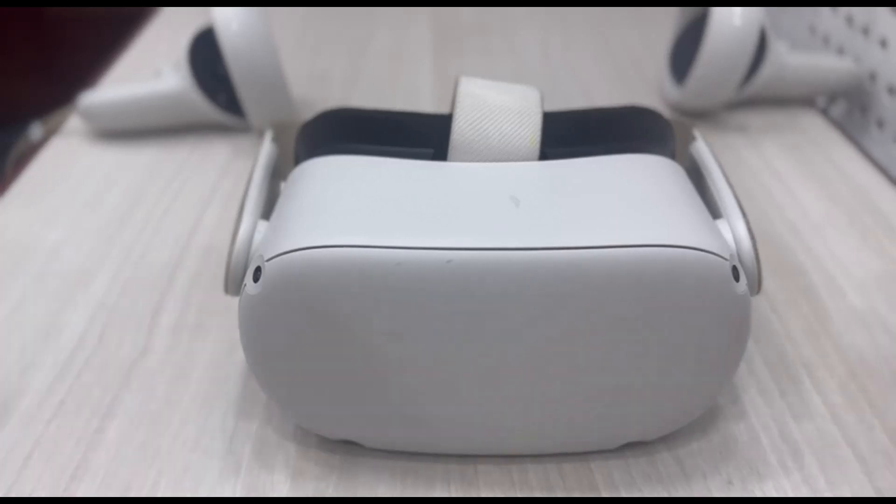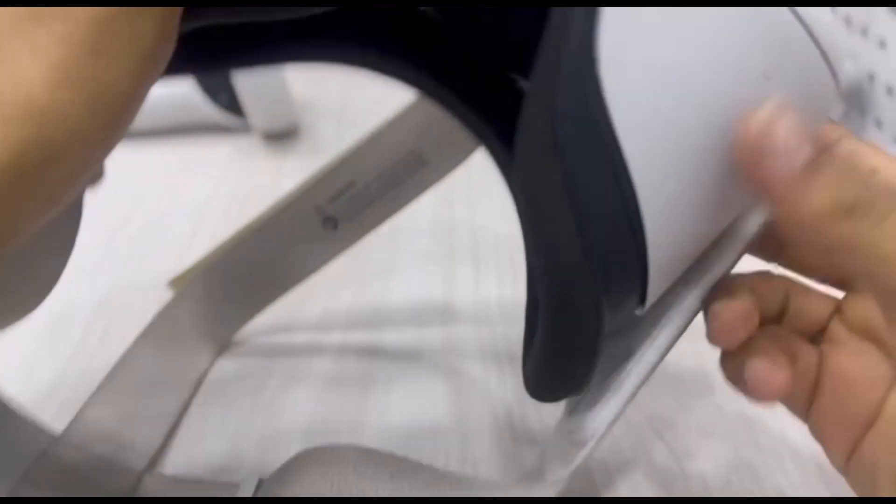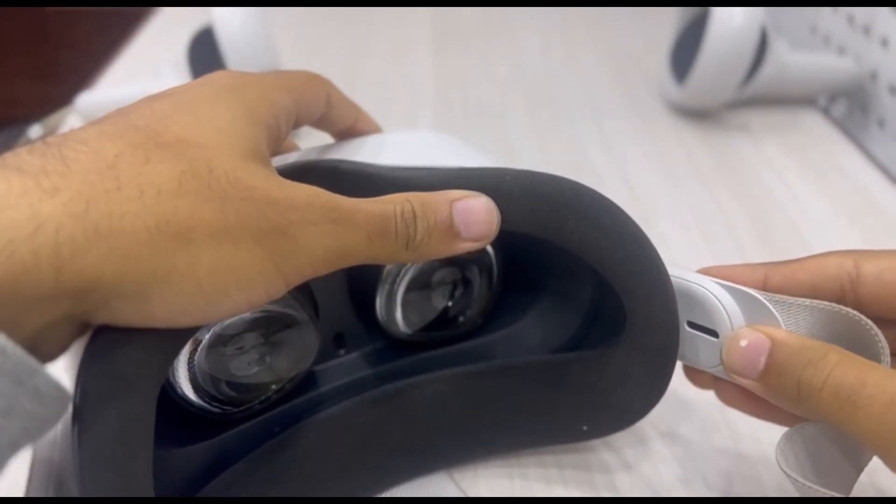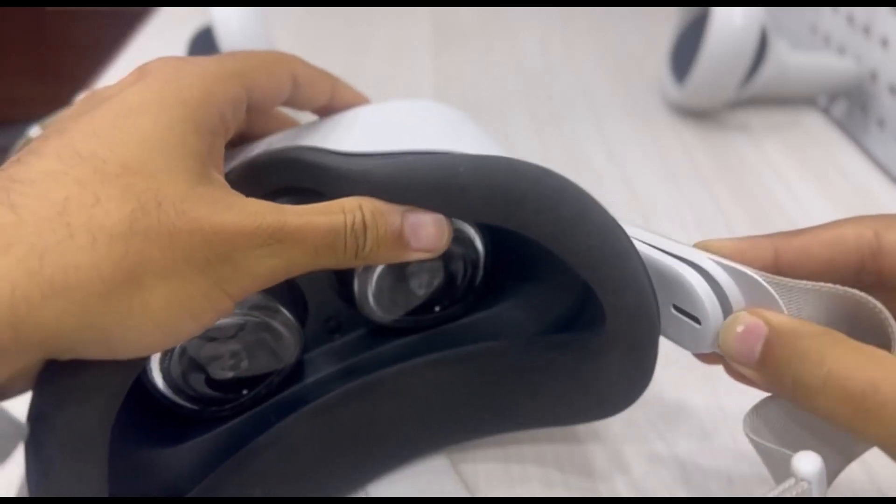To do that, it's really easy. All you have to do is take your Oculus Quest headset and flip it around. After that, you can see these attachment points, so all you have to do is take this out.